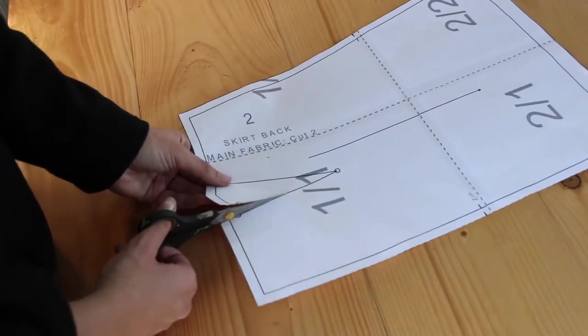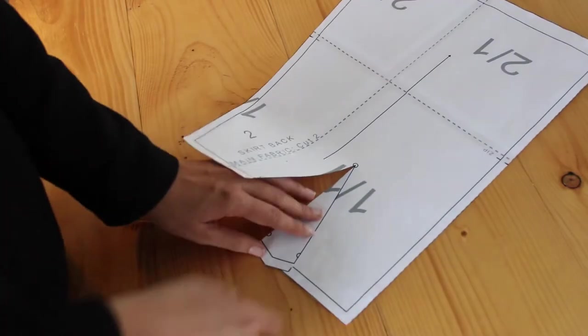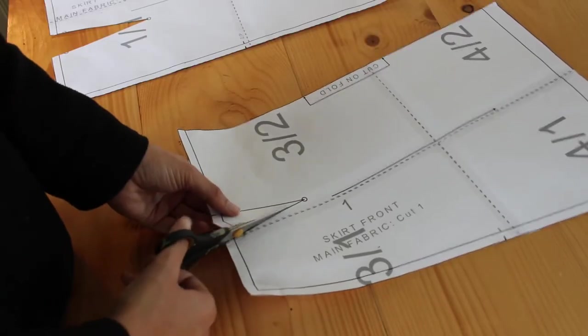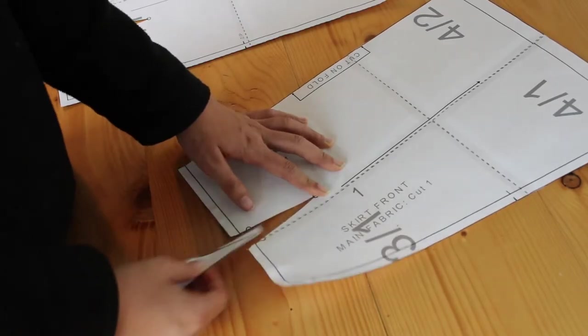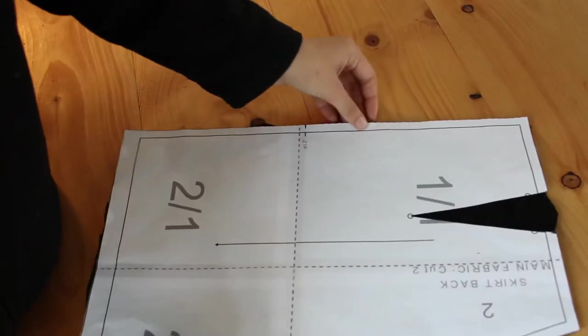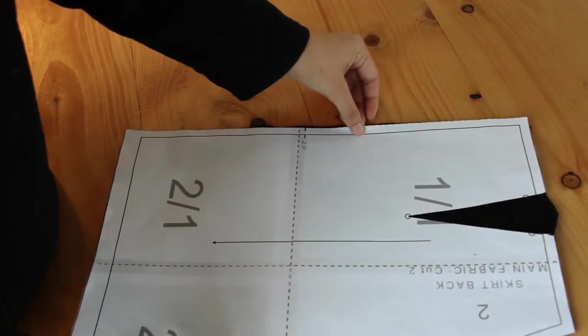Now you can take your pattern piece and cut out where the dot is, and you are going to repeat the same process for the other piece. Now you're going to take your pattern and place it on a fabric piece.